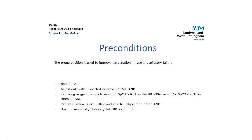The prone position is used to improve oxygenation in type 1 respiratory failure. It is suitable for all patients with suspected or proven COVID. Prior to putting someone in the awake prone position you must ensure all of the following preconditions are met. The patient must be requiring oxygen therapy to maintain saturations above 93%, and/or have a respiratory rate of over 30 breaths per minute, and/or have saturations less than 95% on room air.